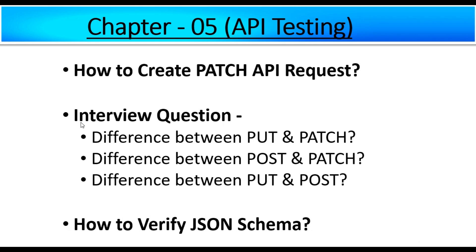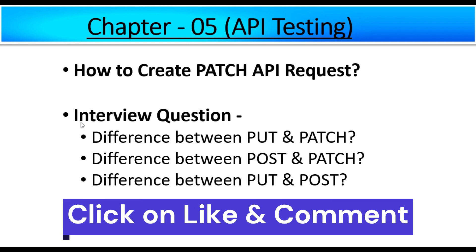Next topic: what is the difference between POST API request and PATCH API request? In case of POST, the method type is POST, and in case of PATCH, the method type is PATCH. POST is used to create a new resource in the application server. PATCH is used when modifying a resource, where the client sends partial data and only that partial data will be updated without replacing the whole data in the application server.